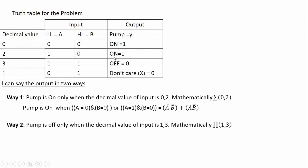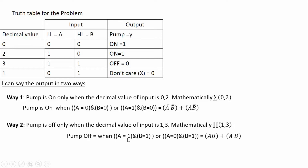Second way: the pump is off when the decimal value of the input is 1 or 3. Mathematically this is written as the product of maxterms — π(1, 3). This means the pump is off when the decimal value is 1 or 3. So pump is off when A equals 1 and B equals 1, or when A equals 0 and B equals 1. Expressing mathematically: A·B + A-bar·B — this is the pump-off expression.